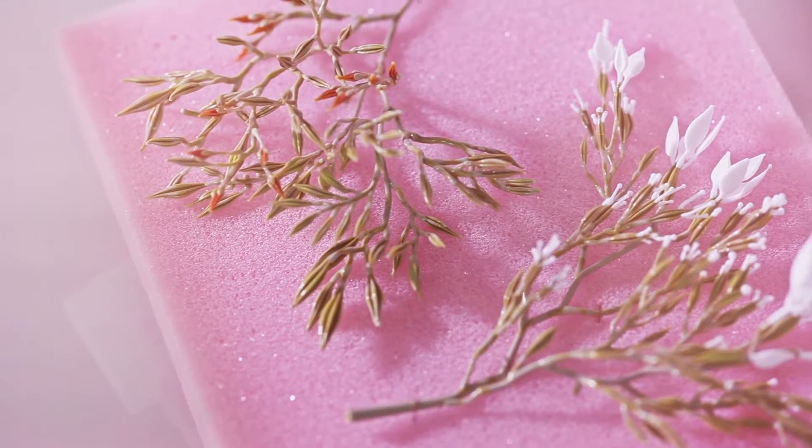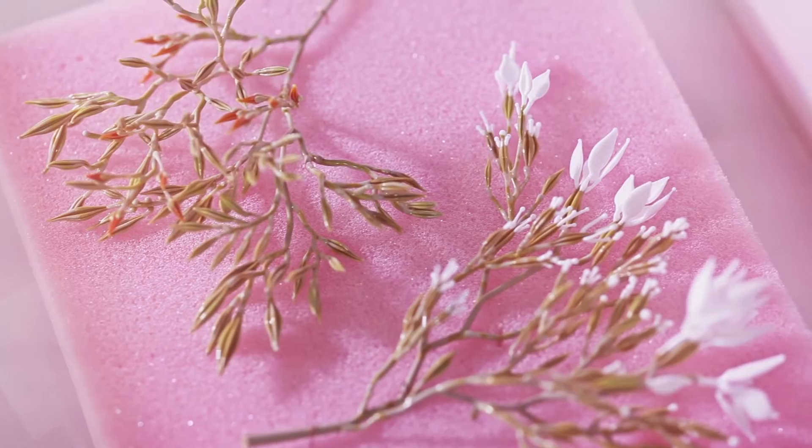He kept these journals. Every time he bought a tree, he'd write it down—how much he paid for it and where it was planted. The back of the journals was rainfall from every day and temperatures and things like that. They're all meticulously written.